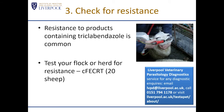Our third area for control is to check for resistance. Resistance to products containing triclobendazole is common in the UK — we've shown this in Wales and England, and it's also very common in Northern Ireland and Scotland. If you use triclobendazole routinely, it's important to test your sheep or cattle to see if there's any evidence of resistance. The best method is the composite faecal egg count reduction test — the CFECRT — which we do with 20 sheep. At Liverpool we can offer that test.